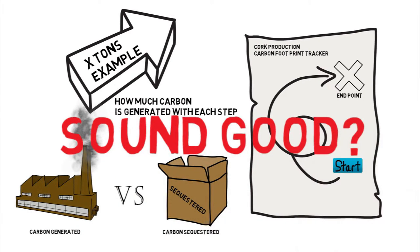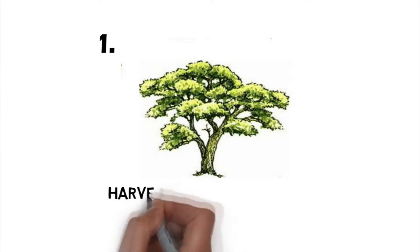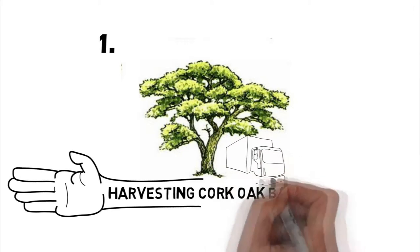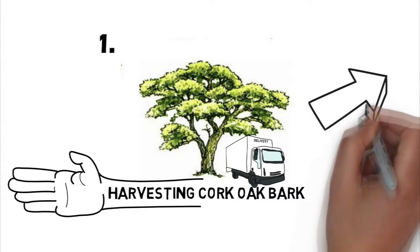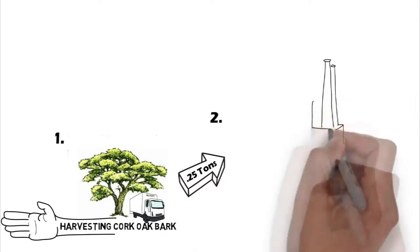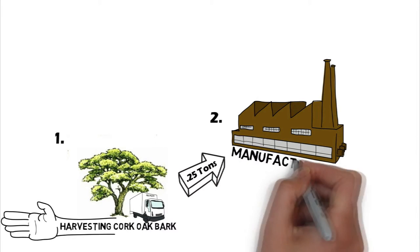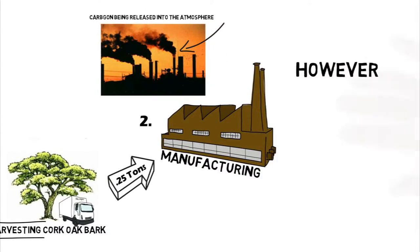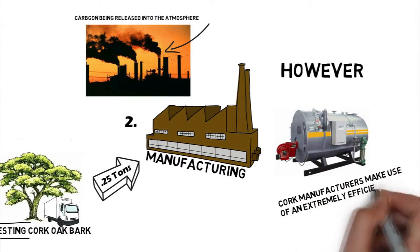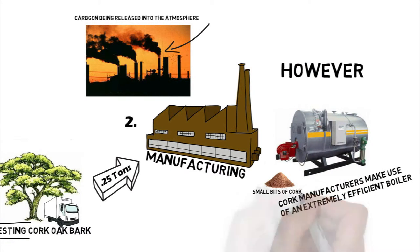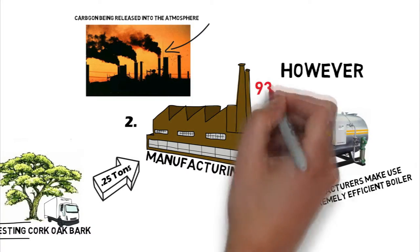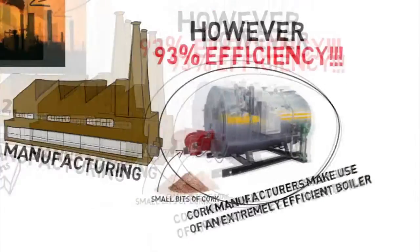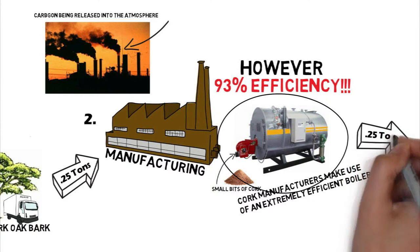Now we're going to track the total amount of carbon generated through each step of the cork's production, using arrows to show how much carbon is generated at each step. The very first step is harvesting cork oak bark. Since this process is traditionally done by hand, the only carbon generated would be transporting the cork to the next stage — we'll count that as 0.25 tons. The next step is manufacturing. Cork manufacturers make use of an extremely efficient boiler that utilizes small bits of cork bark to power the entire manufacturing process, giving roughly 93% efficiency. Let's mark that down as another 0.25 tons generated.